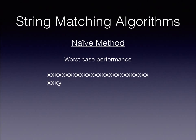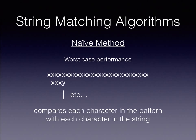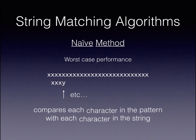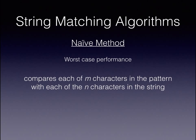Let's take a look at why this gives slow performance. We start by comparing each of the characters until we have a mismatch at the letter Y, so we have to shift the pattern along by one. Then we start from the beginning again, comparing each character until we get to the letter Y, and so on. This means we compare each character in the pattern with each character in the string. As we have N characters in the pattern and M characters in the string, the order of the algorithm is O(MN).